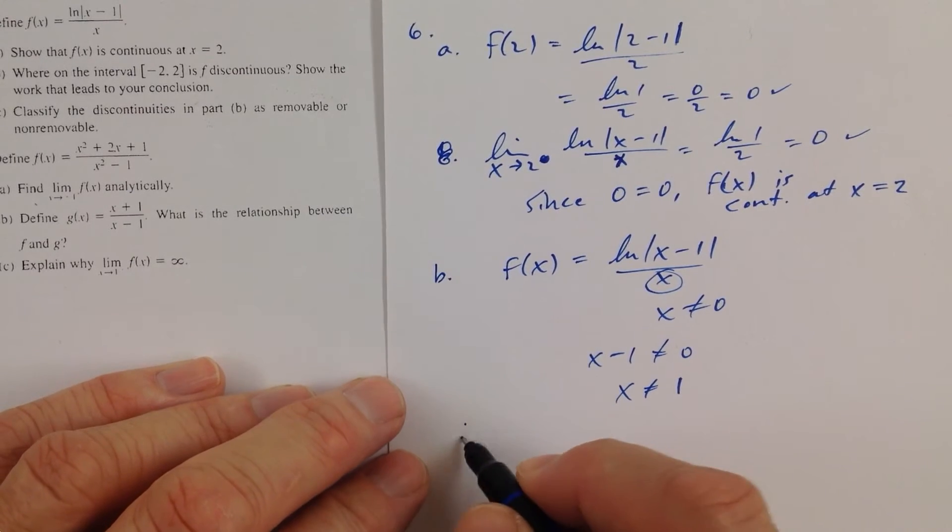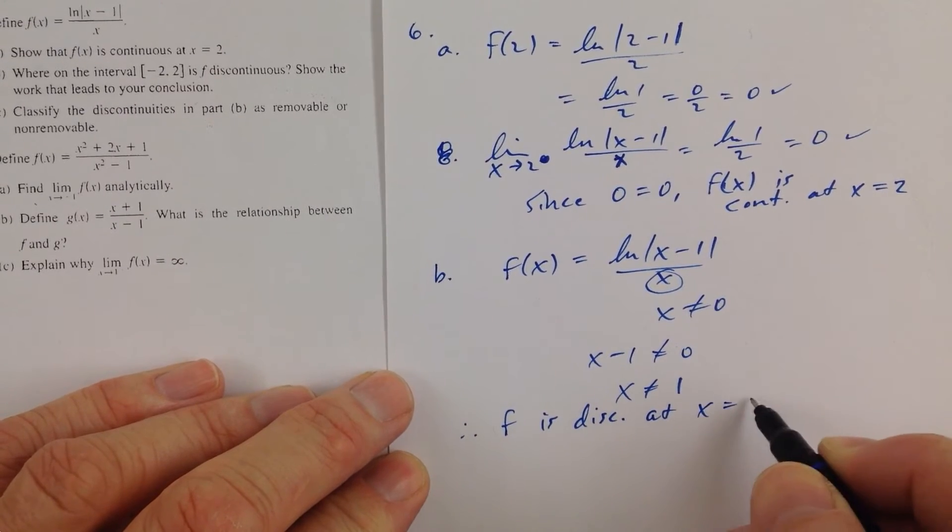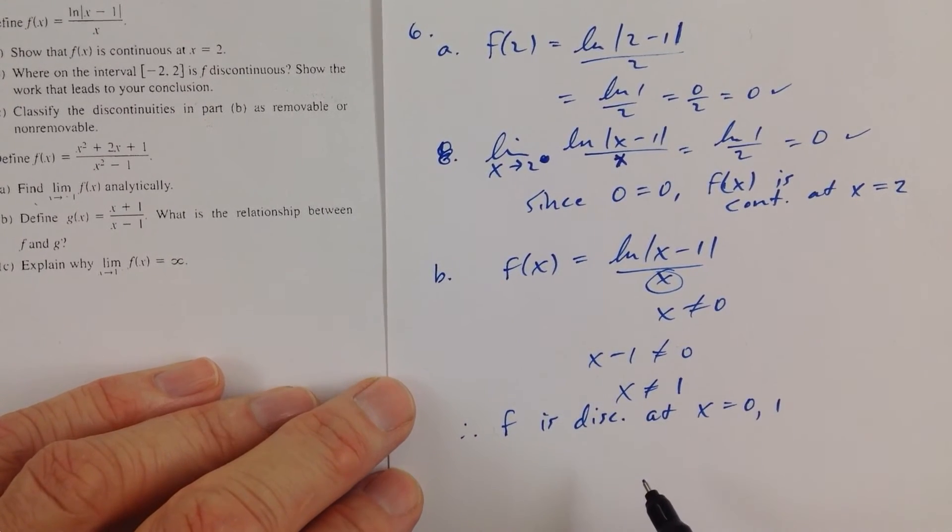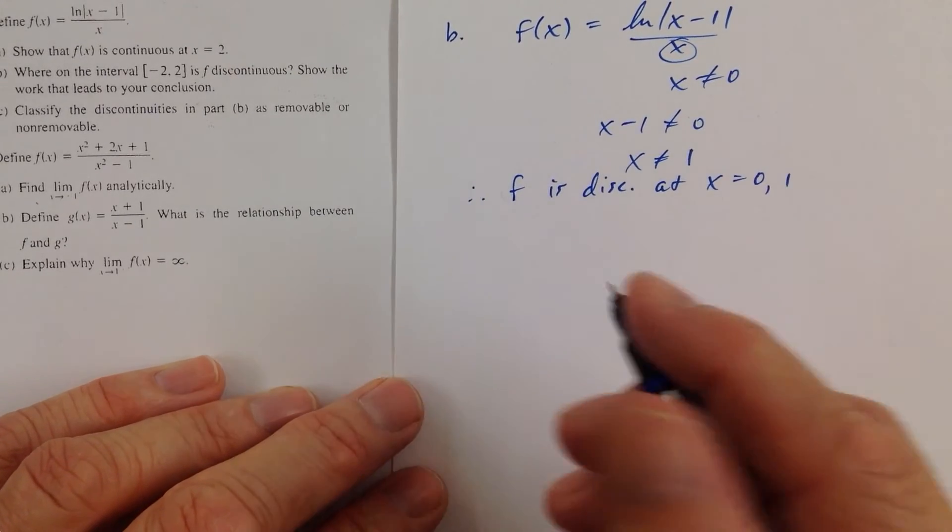And that's where the function would not be continuous, at x equals 0 and x equals 1. So, we could say, therefore, f is discontinuous at x equals 0 and 1. That would be it for that. Let me scoot on up here, and let's look at part C.